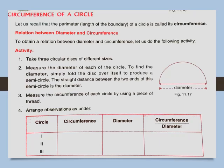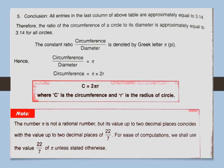Since there are three different circles, you will get three different readings. If you take the ratio of circumference upon diameter, you will get a constant number. All the entries in the last column of the above table are approximately equal to 3.14. Therefore, the ratio of the circumference of a circle to its diameter is approximately equal to 3.14 for all circles.